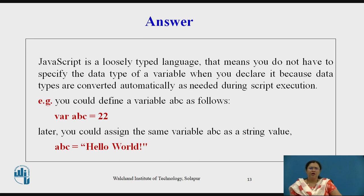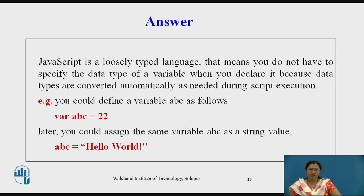For example, if you define a variable abc as follows — var abc = 22 — and later you wish to define that same variable as a string, you could assign abc = 'Hello World' inside quotation marks. So this is all about data types in JavaScript.